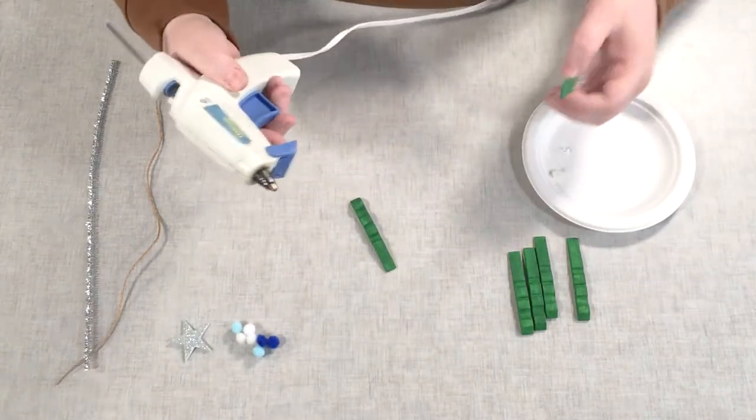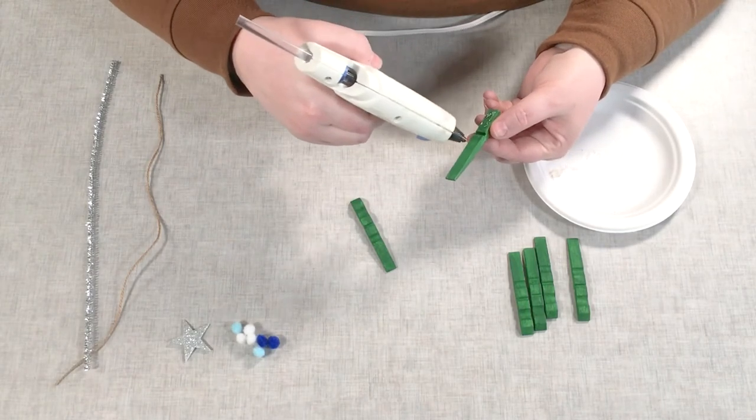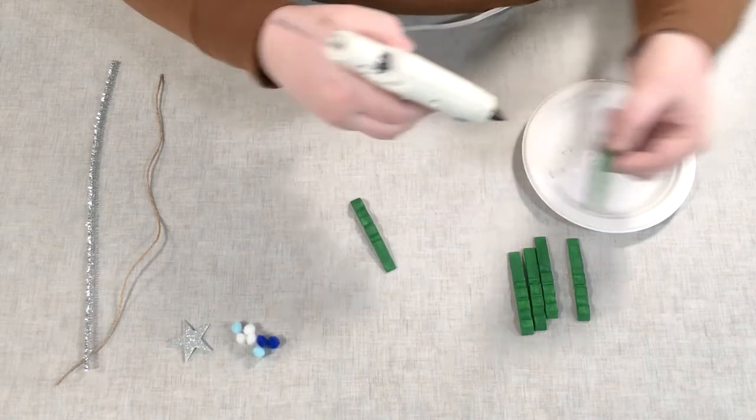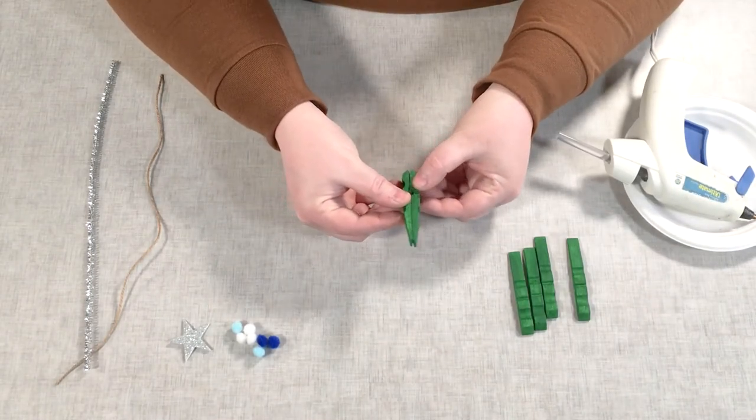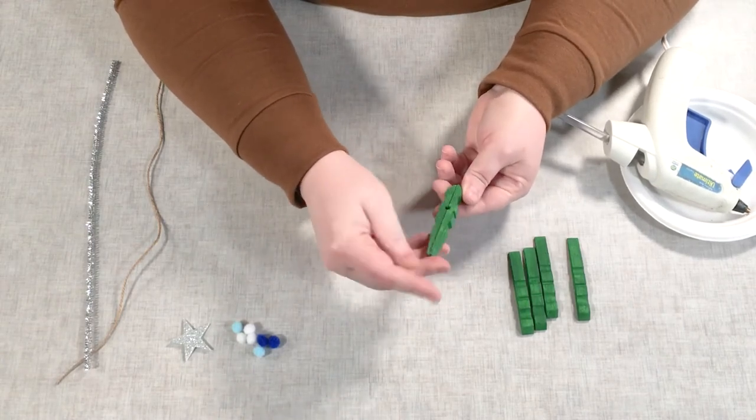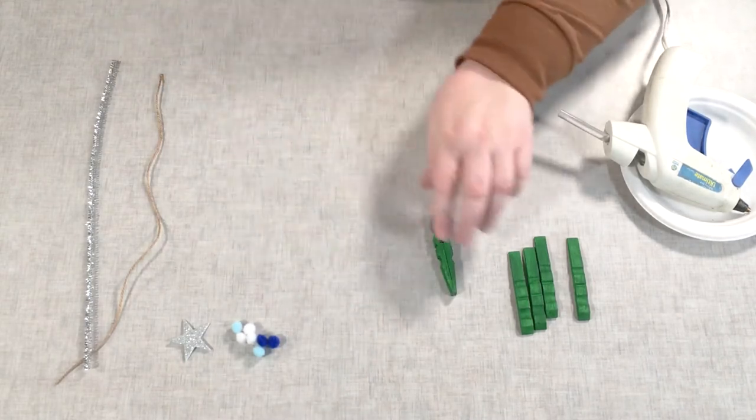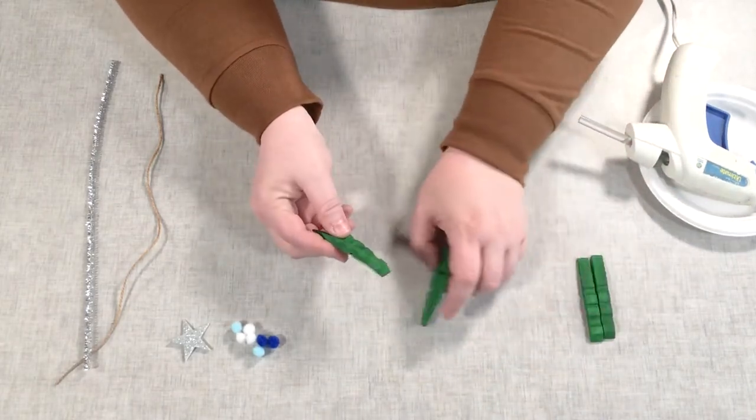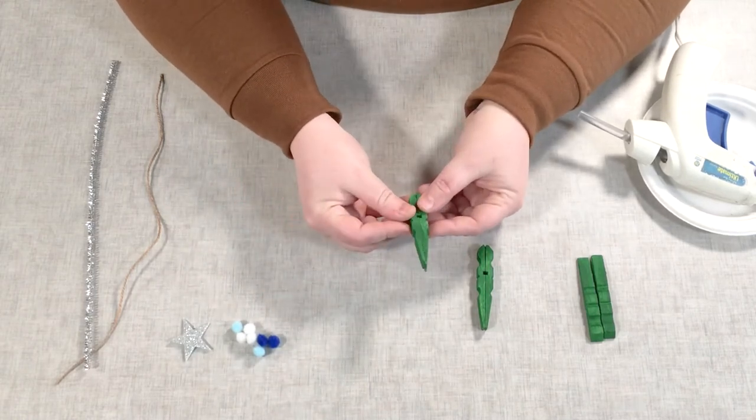Okay, so we're going to glue those together. Again you can use hot glue or you can use white glue. Either way works. Line those up. A little bit squeezes out the edge, that's fine, just wipe it off. Okay, so you've got one piece like that and then we're going to do another one just the same. So thin ends at the top, glue together like that.